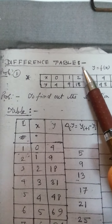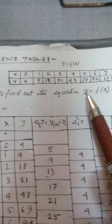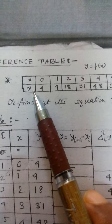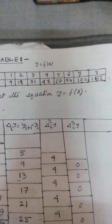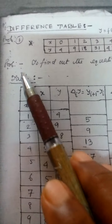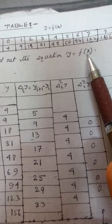We use a difference table to find out the value of y as a function of x. The x and y values are given, for example x=0, y=4. The problem is to find out the equation y as a function of x.